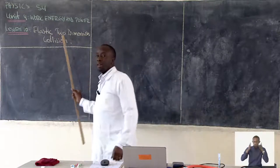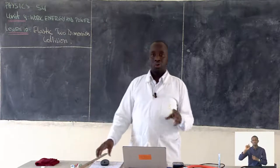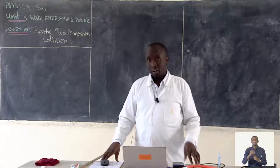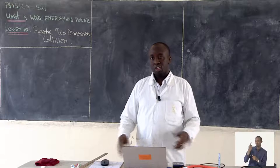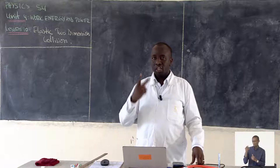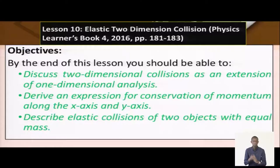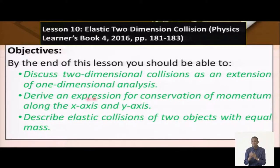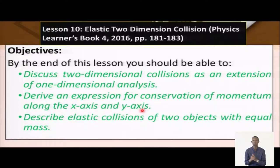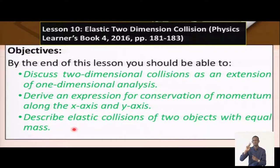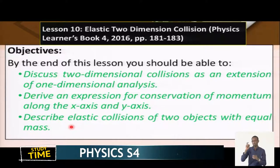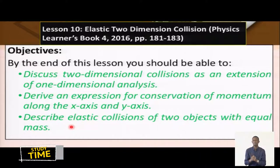So this is what we have here. As you remember from the last lesson, we were discussing elastic one-dimension collision, but today it is in two dimensions. I want you to be able to: one, discuss two-dimensional collisions as an extension of one-dimensional analysis; two, derive an expression for conservation of momentum along the X and Y axes; and three, describe elastic collisions of two objects with equal masses. This is what I want you to achieve by the end of this lesson.